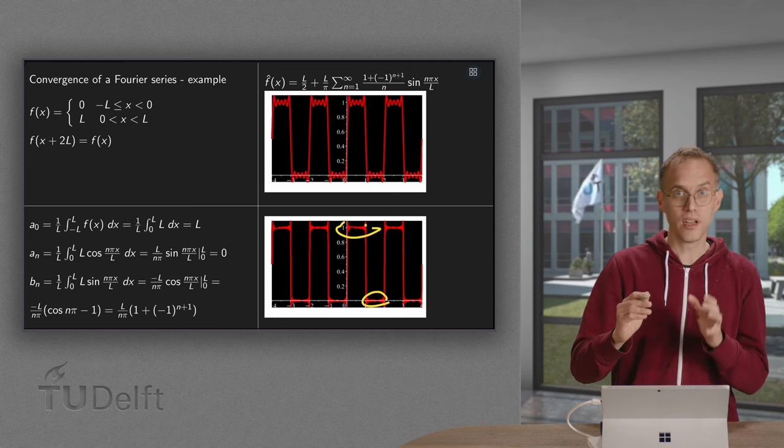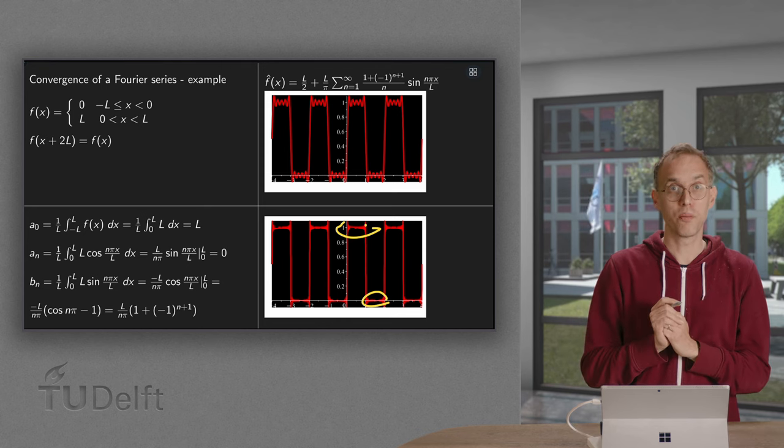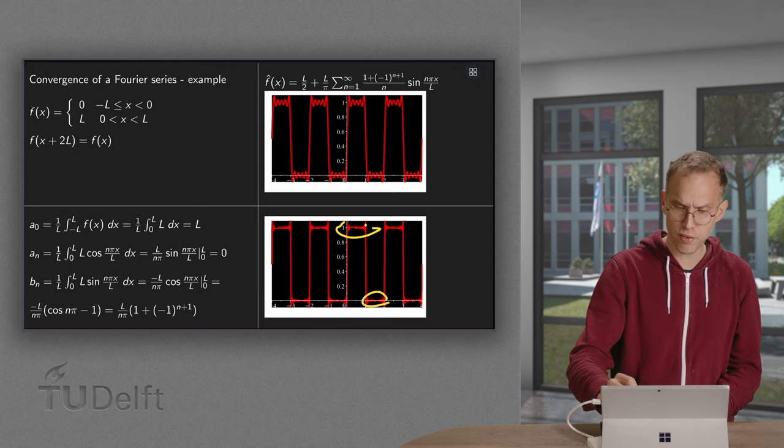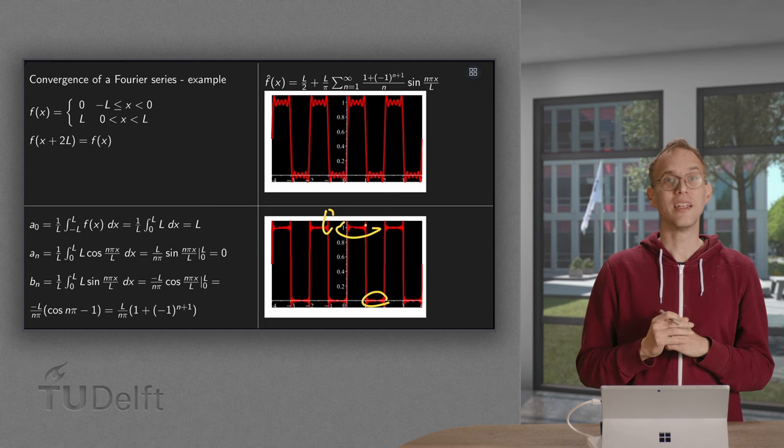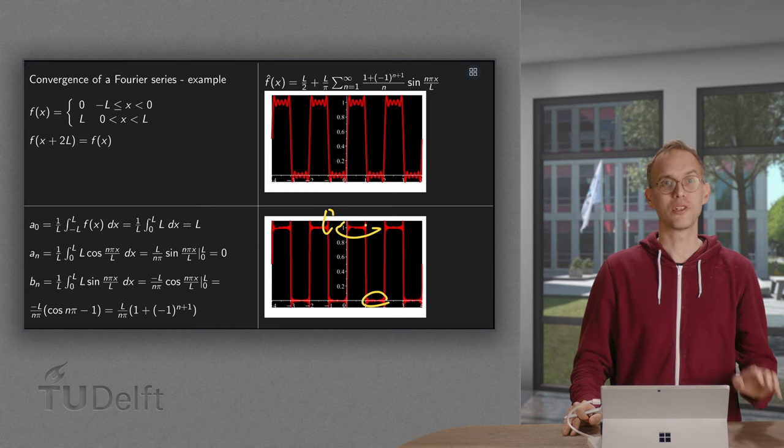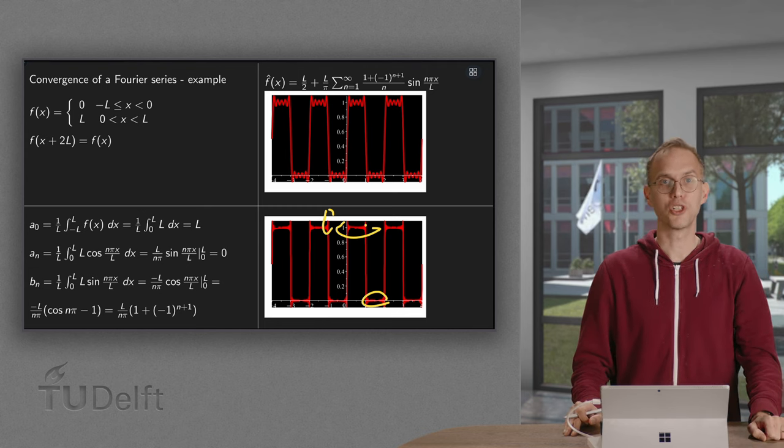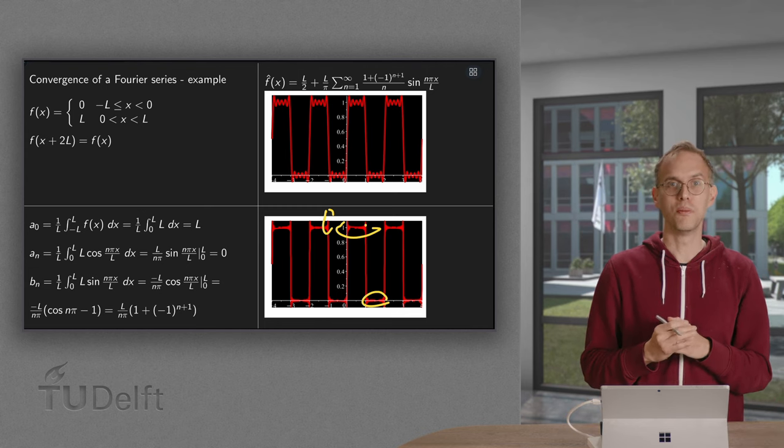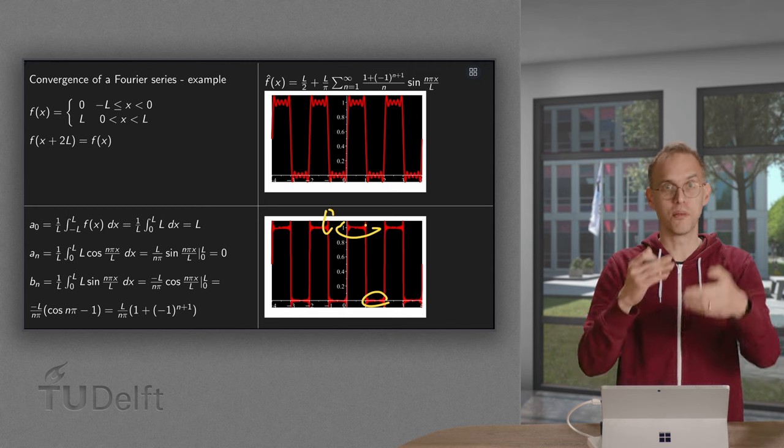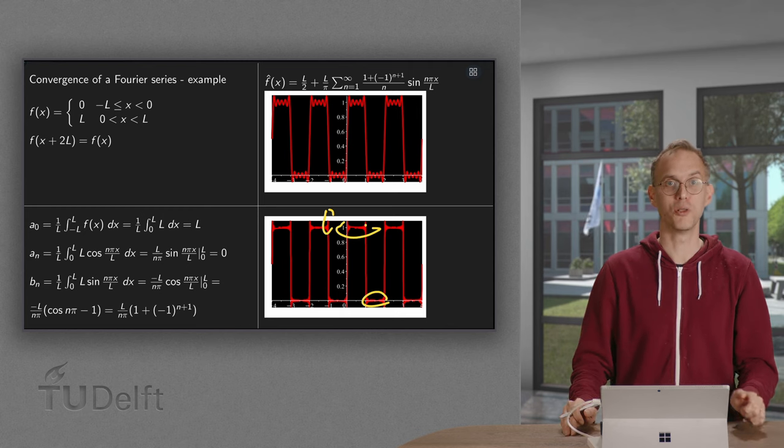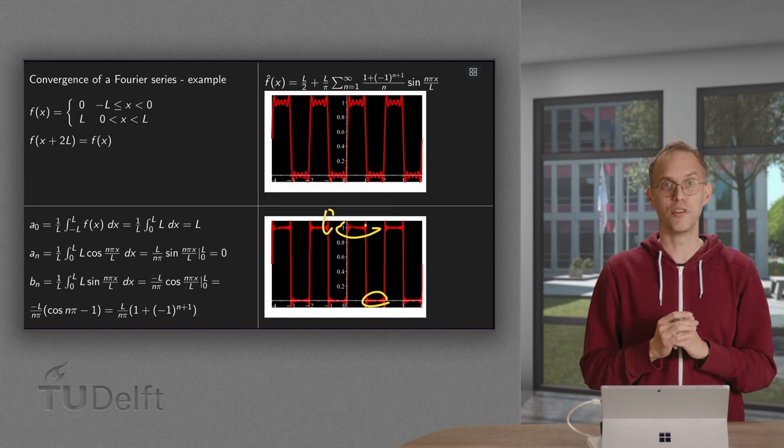So you see our approximation is already quite good, apart from the point where we are jumping, and that is sort of the bad news. Also at the point where you are jumping, you will still make these overshoots. I cannot do much about it. Also if you will take more and more terms, you just keep the overshoots, it's called the Gibbs phenomenon.